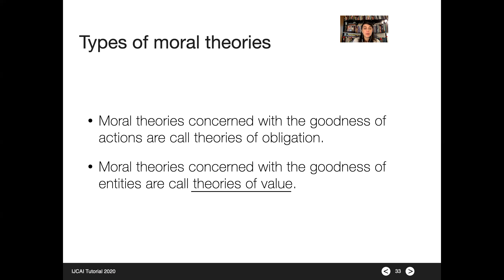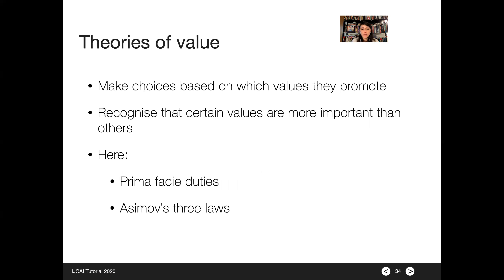Moral theories concerned with the goodness of entities and agents are called theories of value. The input you use to make your choice is not what you should do, but what values you want to promote. Theories of value stipulate that choices should be made based on which values they promote, and in contrast to theories of obligation, they recognize that perhaps there is not one specific moral course of action — that sometimes whether something is moral is context-dependent.